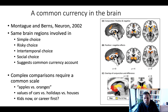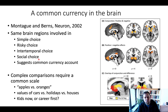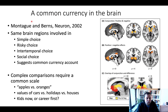The valuation system includes regions such as VMPFC, ventral striatum, and also the insula, which are consistently involved in choices across different domains — simple choice, risky choice, food choices, intertemporal choice, and as we'll see, social choice. This system seems able to perform decisions across many different choice domains, allowing complex comparisons that require a common valuation scale. This is called the common currency theory, originally suggested by Read Montague and Greg Berns in a paper in Neuron in 2002.